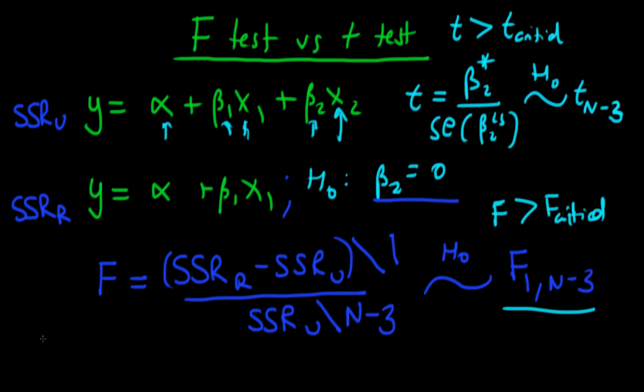It turns out that an F distribution with 1 degrees of freedom for its first input, and n minus 3 degrees of freedom for its second input, is in fact absolutely identical to T distribution squared, with n minus 3 degrees of freedom.